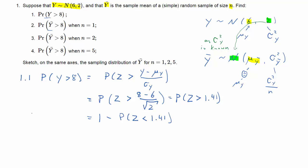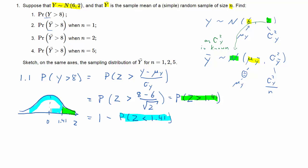That's the same as 1 minus the probability that Z is smaller than 1.41. Looking at a sketch: Z is centered around 0, and 1.41 is marked. What we want is the probability that Z is larger than 1.41 — that's the green region. From the standard normal table we can get the probability that Z is smaller than something — that's the blue region. Since both add up to 1, we take 1 minus the blue bit. From the table, that gives 0.9207, so the answer is 0.0793.